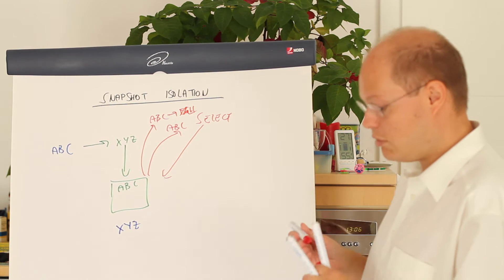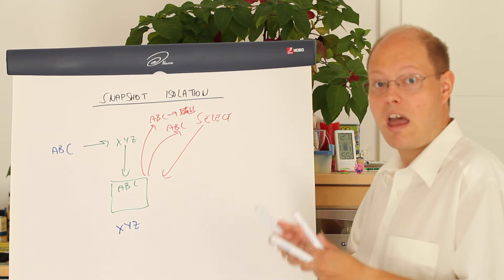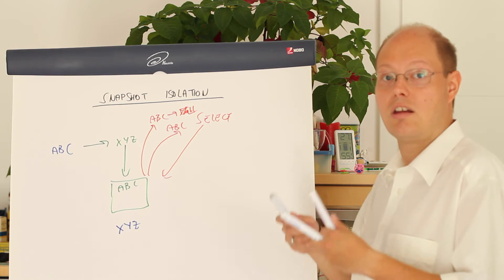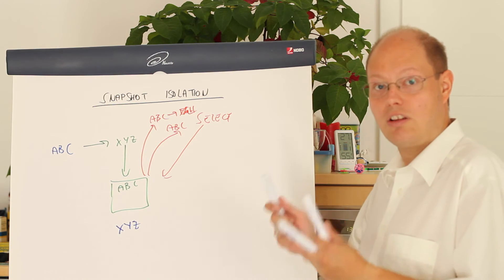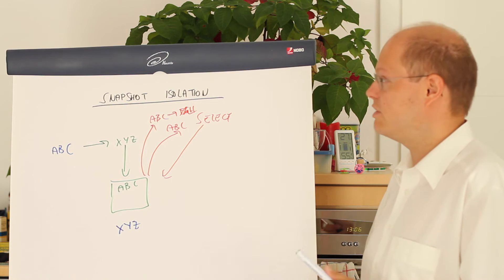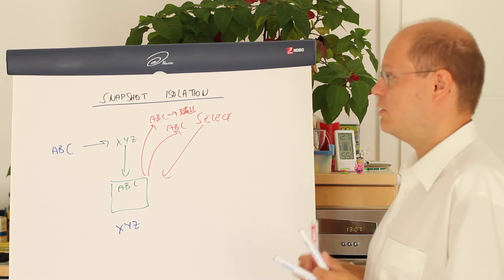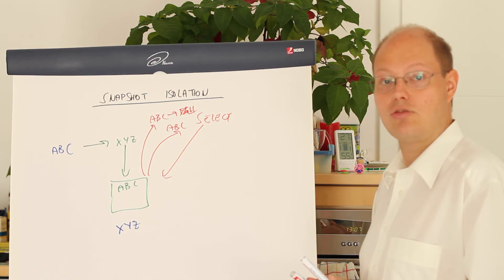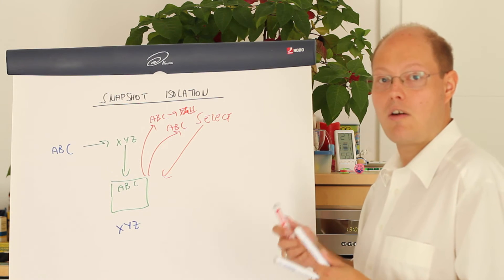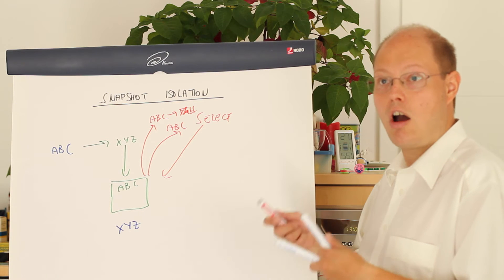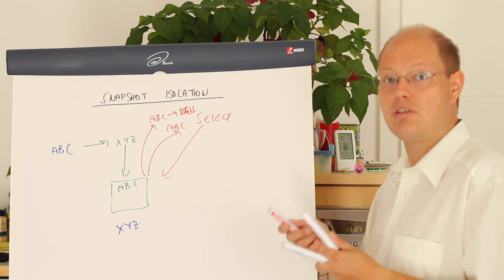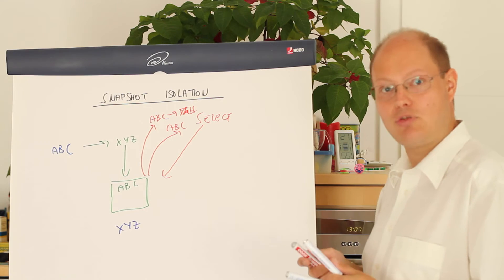Of course, when you afterwards want to change that value to 'fgh', it's not possible anymore because there is already a newer version. Therefore SQL Server generates a so-called update conflict, rolls back the transaction, and returns error number 3960. You also have to react on that error number when you run your transactions in Snapshot Isolation. Let's switch over to SQL Server Management Studio where I want to show you how easy it is to get into an update conflict.